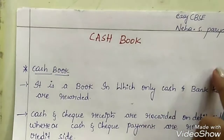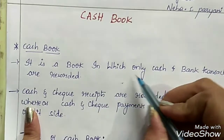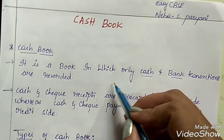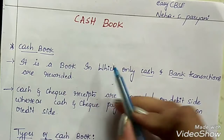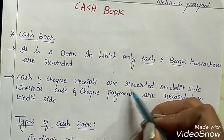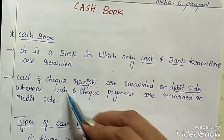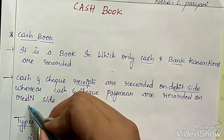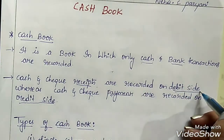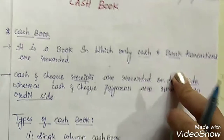Let's try to understand what is a cash book. Cash book, as the name suggests, is a book in which only cash and bank transactions are recorded. Any type of credit transactions are not recorded in the cash book — only cash and bank transactions are recorded. Cash and check receipts are recorded on the debit side, whereas cash and check payments are recorded on the credit side.